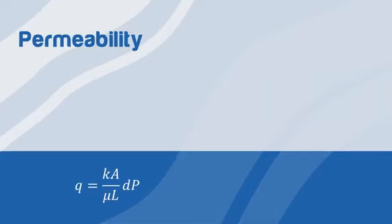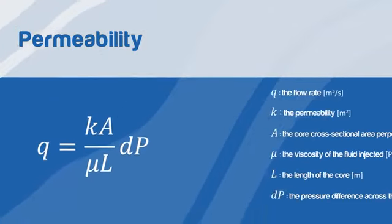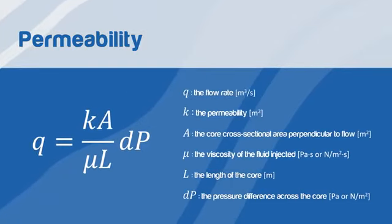The concept of permeability was first introduced by Henry Darcy in 1856 when he performed an experiment on sand-filtrates and analyzed the concept of permeability. Darcy's law for single-phase liquid is expressed as q equals ka over mu L delta p.